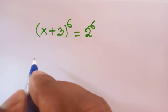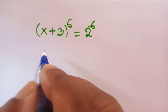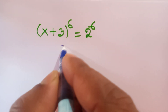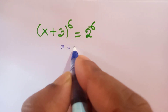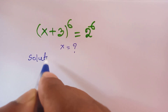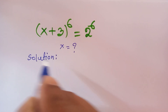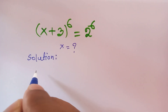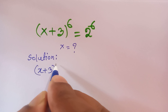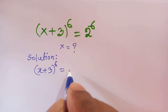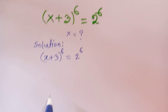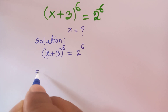Hello everyone, welcome. We'll solve this Math Olympiad question: how to find the value of x. Our question is x plus 3, raised to the power 6, is equal to 2 to the power 6.